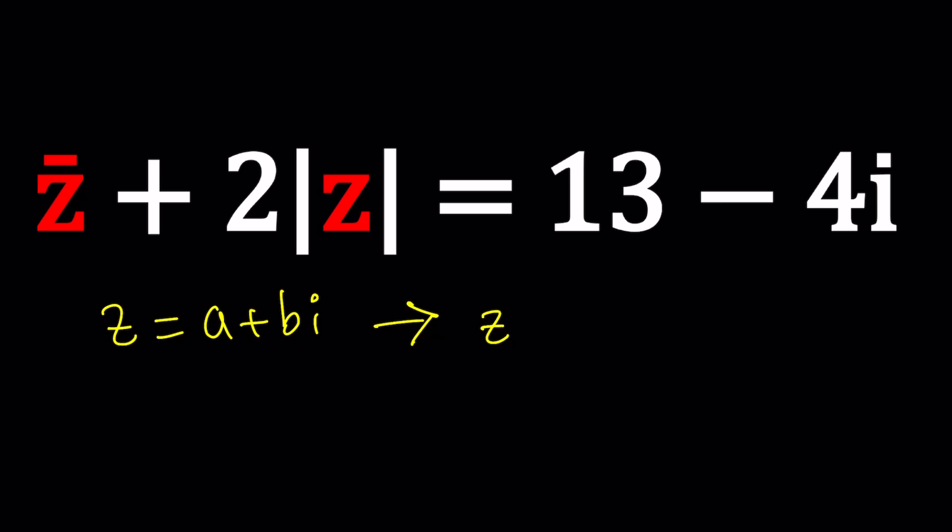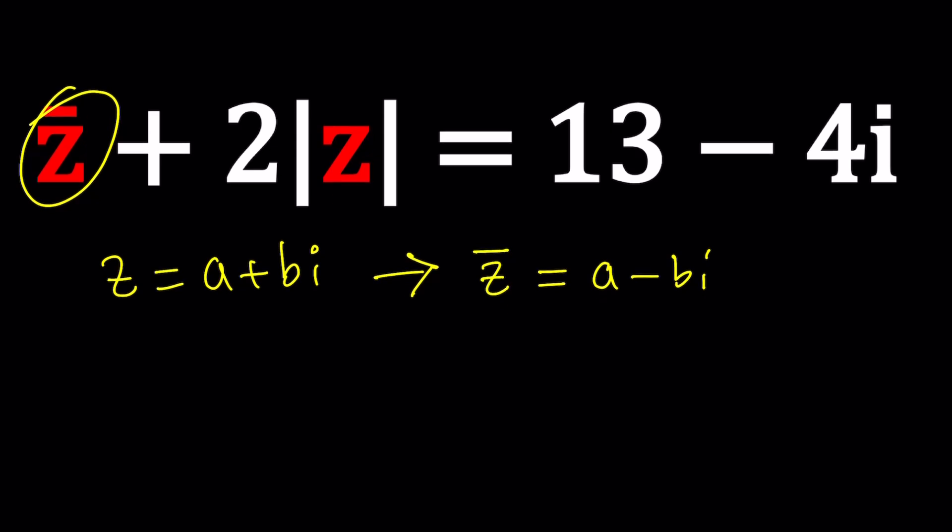If z is a plus bi, z bar which is the complex conjugate of z is a minus bi. In other words, it's the unique complex number that depends on z. When they are multiplied and added we always get a real answer, and that's unique because no other number will satisfy it. And when I say number I'm talking about complex numbers.